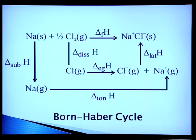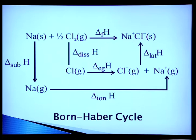You can see the Born-Haber cycle in diagram form, where Na(s) + ½Cl₂(g) → Na⁺Cl⁻(s) with ΔH being the heat of formation. The five steps shown are: heat of sublimation, ionization enthalpy, dissociation energy, electron gain enthalpy, and finally lattice energy.